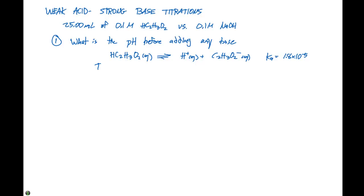If we set up an ice table with our initial concentrations, we have 0.1 molar in the acid and 0 H plus and 0 C2H3O2 minus.